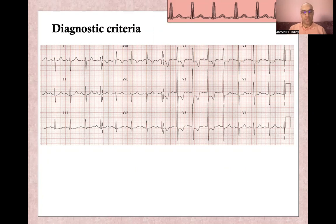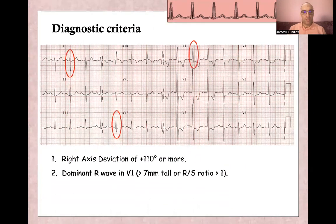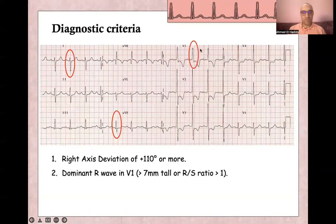So first, the diagnostic criteria is right axis deviation, then a dominant R wave in V1. There is a larger or dominant R wave in V1, or an R:S ratio more than one.